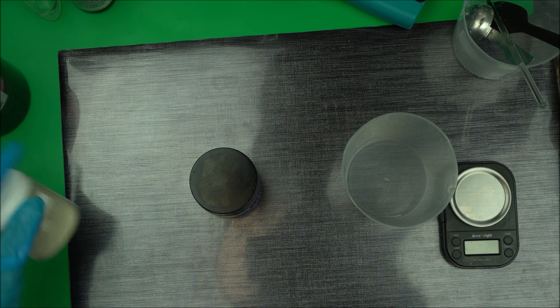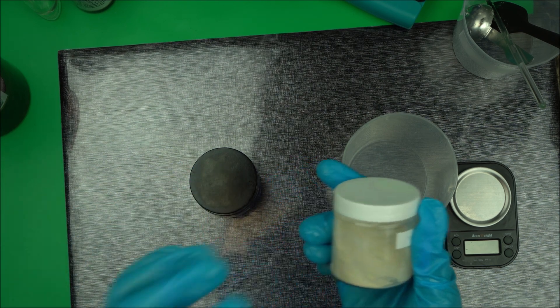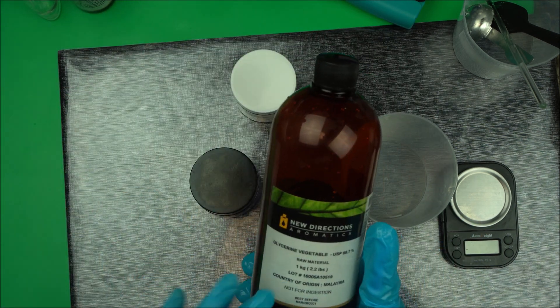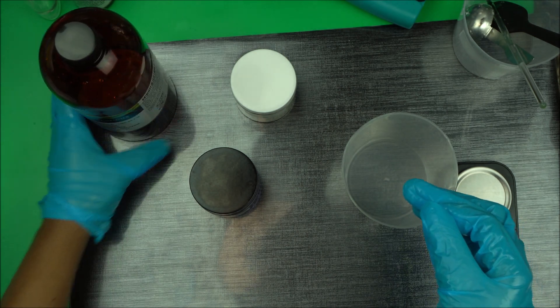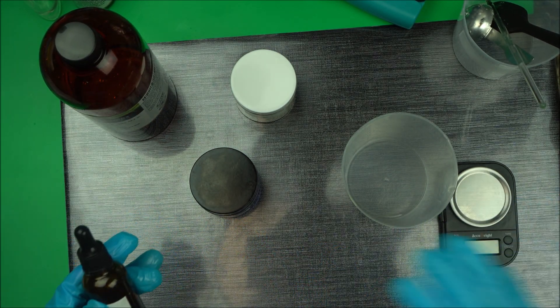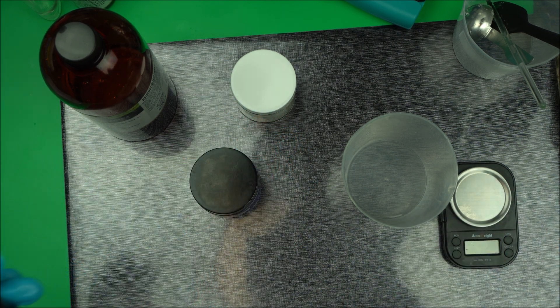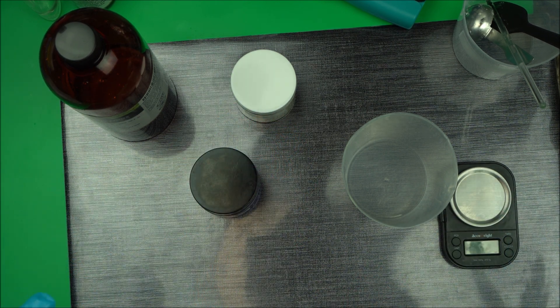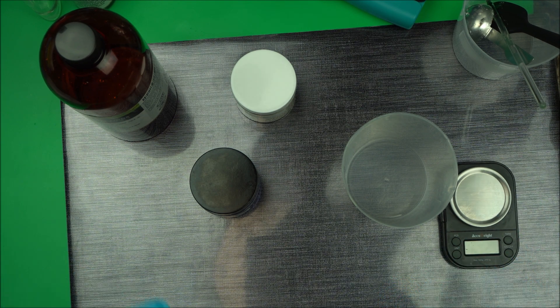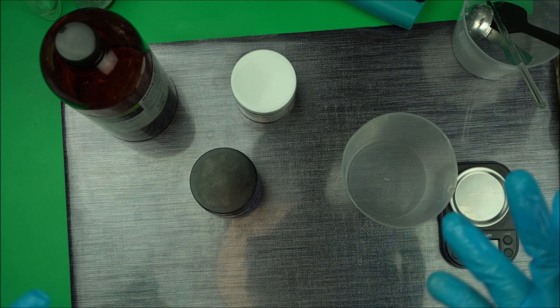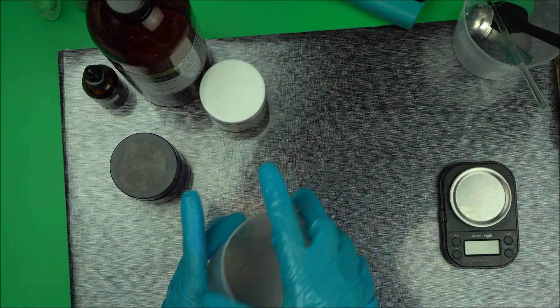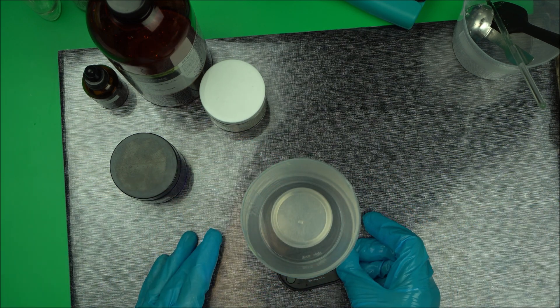I'm going to be using xanthan gum to turn it into gel, then glycerin, and finally a preservative. If you don't have a preservative you can still make it, but just keep it in the fridge and use it within a week. If you have your preservative you can keep it out of the fridge.